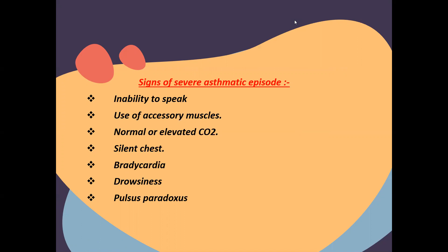Signs of a severe asthma attack include: inability to speak, the patient being hypoxic, elevated respiratory rate, and use of accessory muscles — including the sternocleidomastoid muscle, intercostal, subcostal, and suprasternal notch recession.